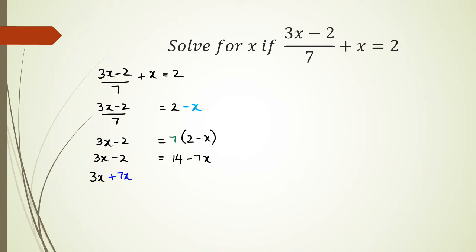Rearranging, I'm going to have 3x, because negative 7x when I bring it to this side is positive 7x, and I've got minus 2 equals 14. So 10x - 2 = 14, then 10x = 16, and x = 16/10. That is my answer for this one.